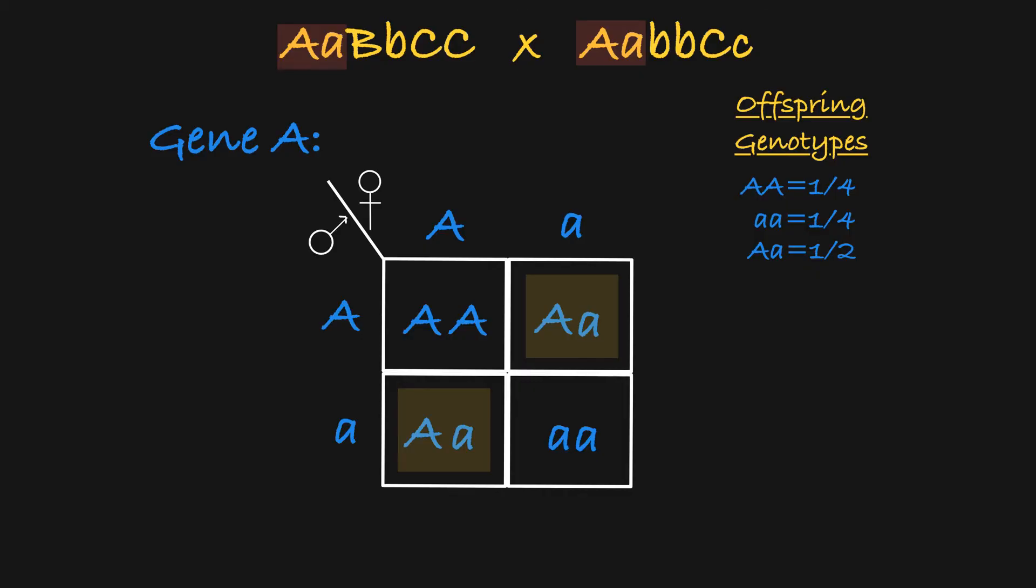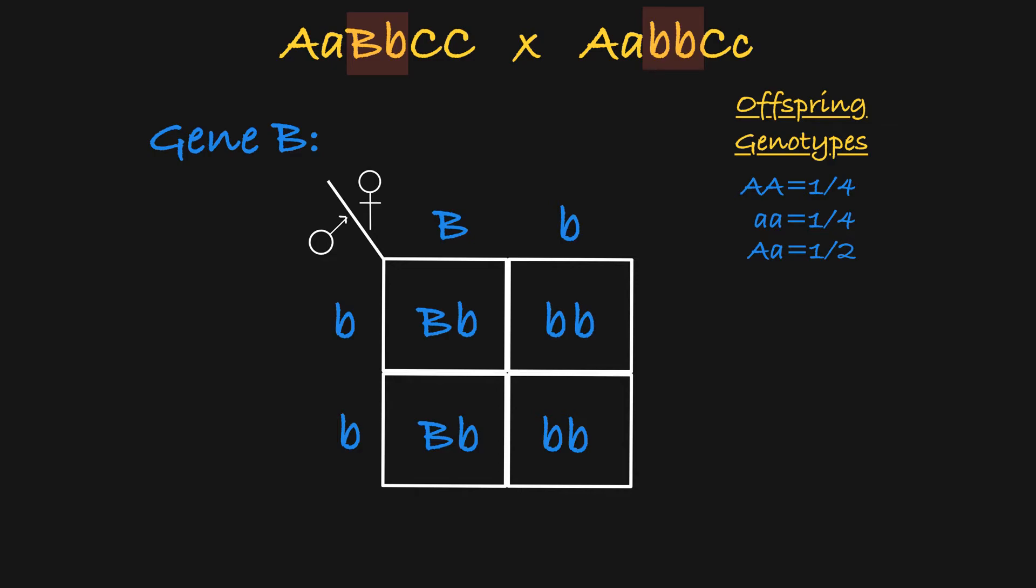Let's do the same thing for gene B. When we set up this Punnett square, we see that one half of the offspring will be heterozygous and one half of the offspring will be homozygous recessive.